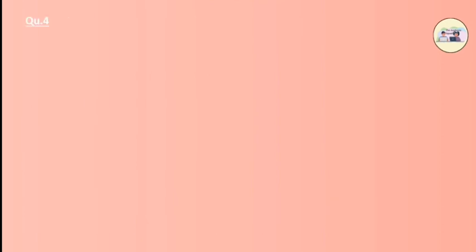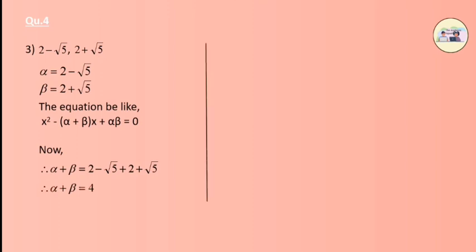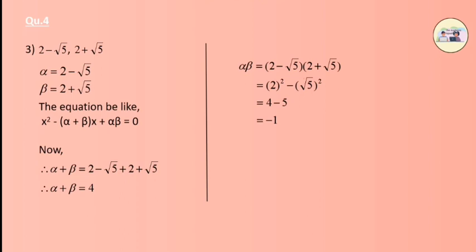Question 4: Form the quadratic equation from the roots given below. We have alpha as 2 minus root 5 and beta as 2 plus root 5. We know that if two roots alpha and beta are given, the equation will be x squared minus (alpha plus beta)x plus (alpha into beta) equals 0. We have alpha plus beta as 4 and alpha into beta as minus 1. The equation is x squared minus 4x minus 1 equals 0.